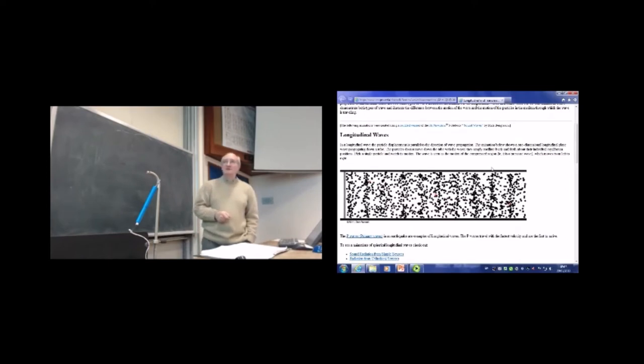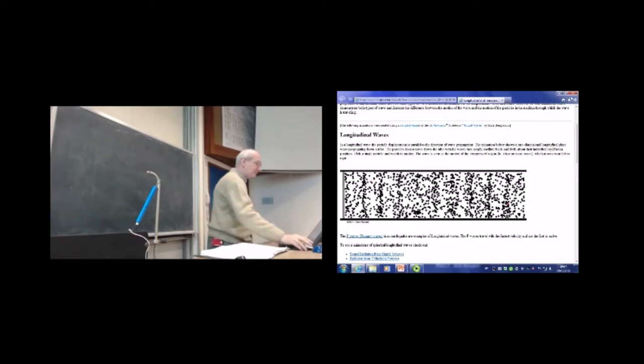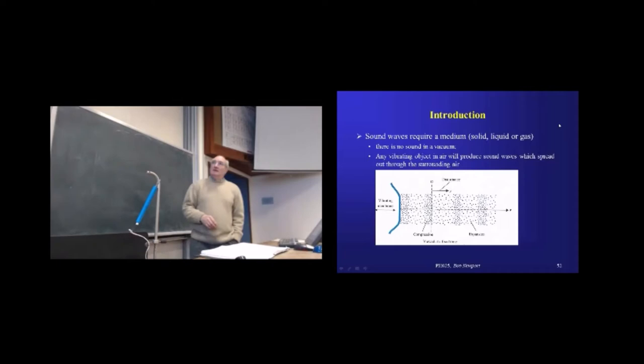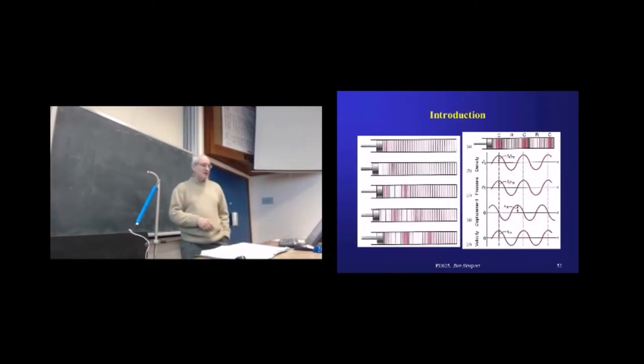This will be useful in a couple of slides' time. Note that when the displacement of these marker particles is zero, when they go through the midpoint, their equilibrium point in their oscillation, we're either talking about a region of maximum pressure, maximum density, or we're talking about a region of minimum pressure, minimum density. I'm pointing that out because it will make reading the graph more meaningful.